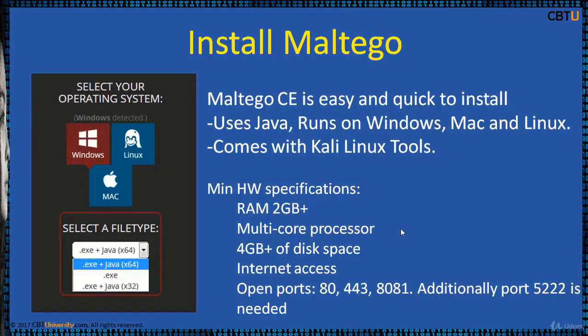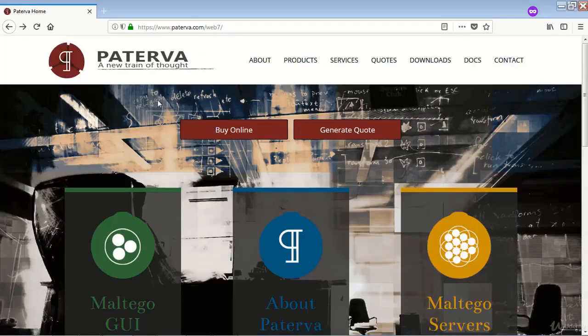If you do not want to use the Kali Linux Kali Tools, you can install Maltego separately. Installation of Maltego CE is easy and quick. It uses Java and runs on Windows, Mac, and Linux. Minimum hardware specifications are 2GB RAM, a multicore processor, 4GB disk space, internet access, and the required ports to be opened.